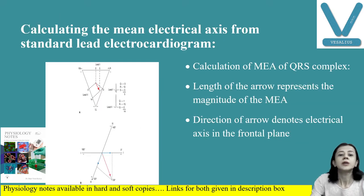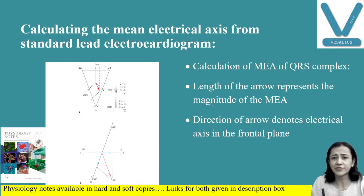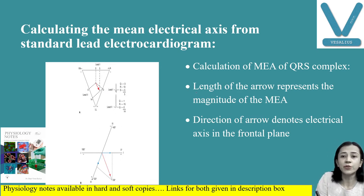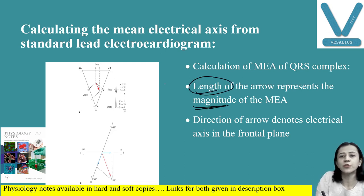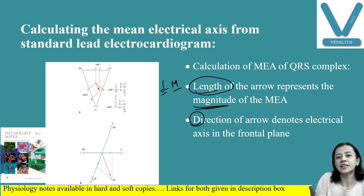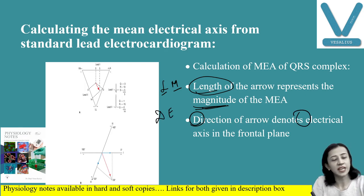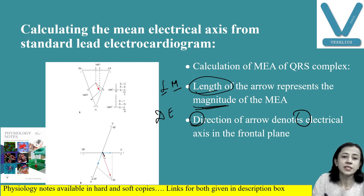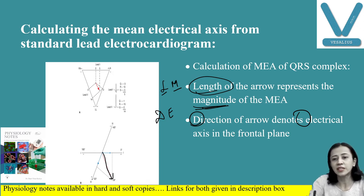The length of the arrow represents magnitude, and the direction of the arrow denotes electrical activity or the electrical axis. To summarize: length denotes magnitude, and direction denotes electrical activity.